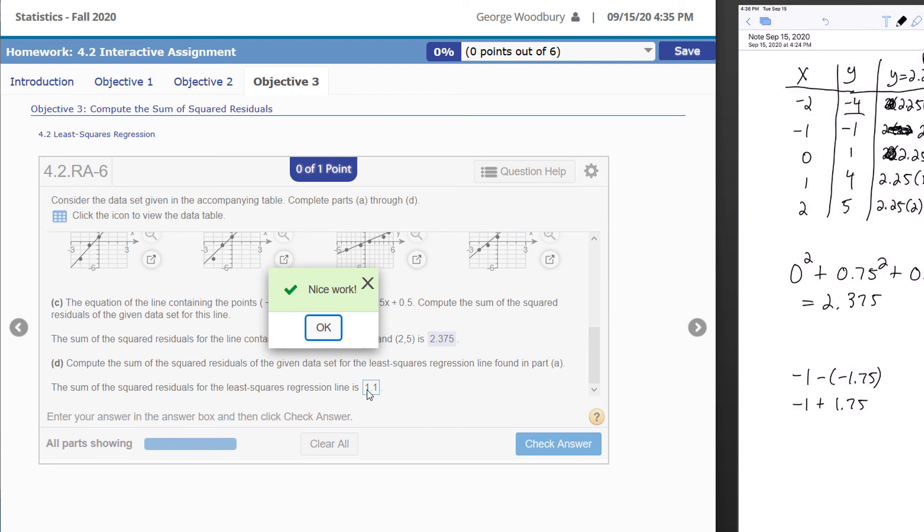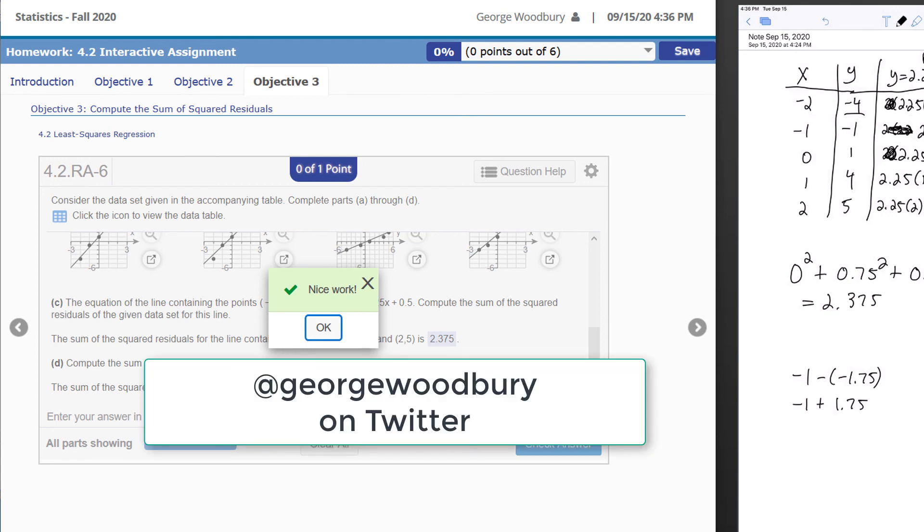And there you have it. So that's a quick walkthrough of 4.2.RA-6. Keep in mind you're going to have a different table of values to work with and a different equation to work with as well. What I've given you is a roadmap for how to do it, but you're still going to have to go ahead and work it out for the data and equation that you have. This is Mr. Woodbury signing out. If you have any questions, you can email me through our Canvas account or track me down on Twitter at George Woodbury, or you can leave a comment on this video on YouTube. Thanks, see you soon.